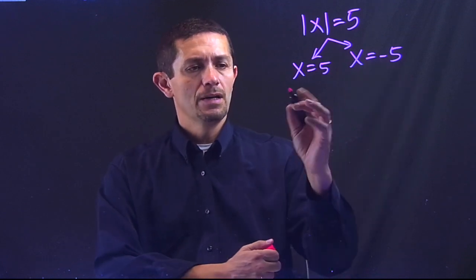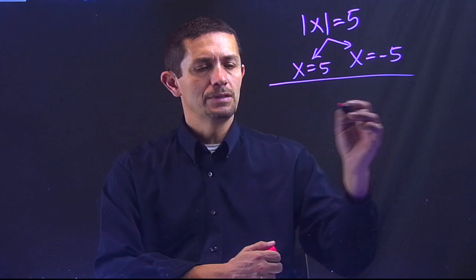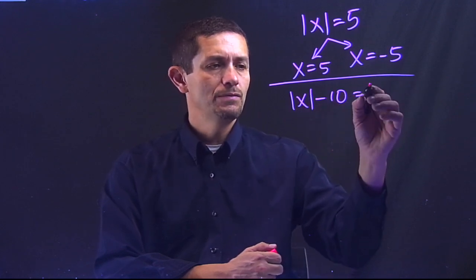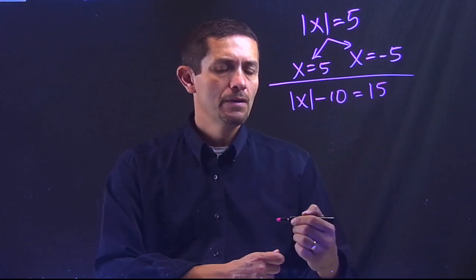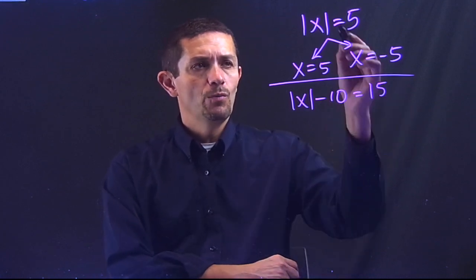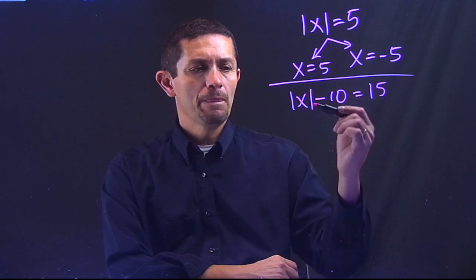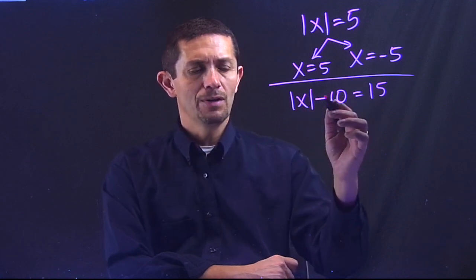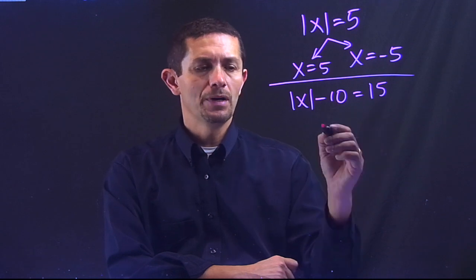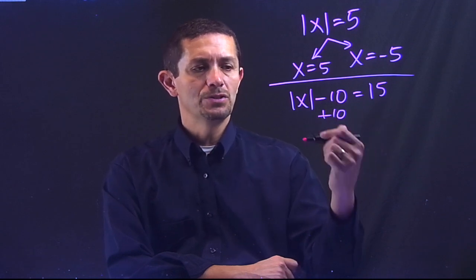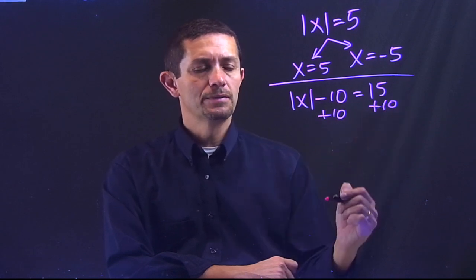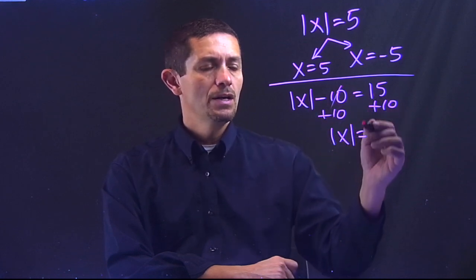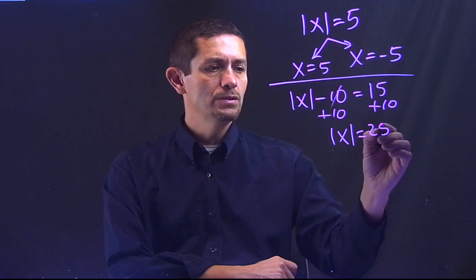Let's pretend that I have absolute value of x minus 10 equals 15. So the idea is before we do this process that we did on the top, the absolute value has to be by itself. In my case, I have to get rid of that negative 10 by doing the opposite, which is adding 10 on both sides.